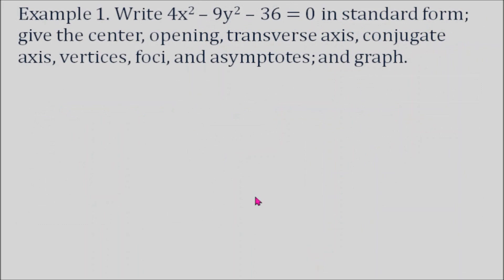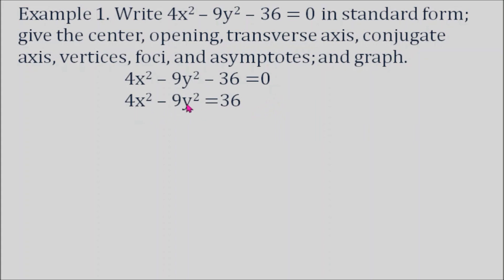Example 1: Write 4x² − 9y² − 36 = 0 in standard form. Give the center, opening, transverse axis, conjugate axis, vertices, foci, asymptotes, and graph. This equation is in general form. First, move −36 to the other side: 4x² − 9y² = 36. Since the right side should equal 1, divide by 36. So 4/36 = 1/9 and 9/36 = 1/4, giving us x²/9 − y²/4 = 1.